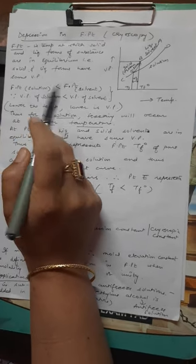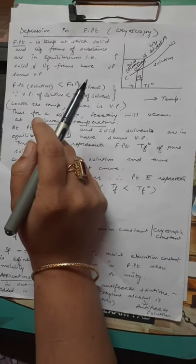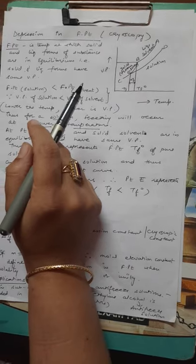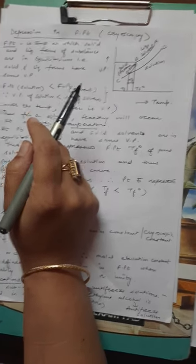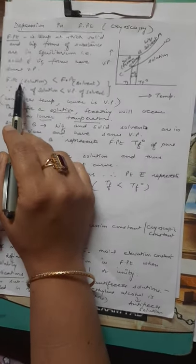When we keep water in deep freezer, the first water droplet when it comes into ice stage or solid state or frozen state, then that temperature is called freezing point. It is always observed that freezing point of solution is lower than that of a solvent.